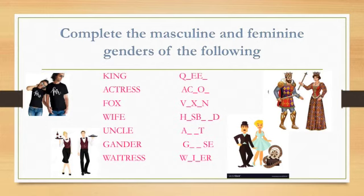Fox — V _ _ _ N. Wife — H _ S B _ _ _. Gander — G _ _ _ S E. Waitress — W _ I _ E R.